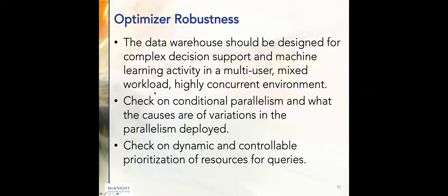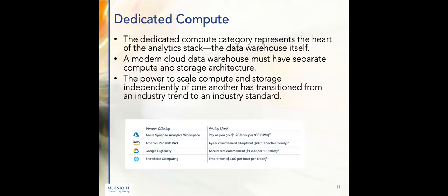Optimizer: the warehouse should be designed for complex decision support and machine learning activity in a multi-user, mixed workload, highly concurrent environment. All optimizers should still be under high development. No optimizers are — shall I say — fully optimized. They still need a lot of work, and some are much better than others. You want to check: does it have conditional parallelism? Check on dynamic and controllable prioritization of resources for queries, which bleeds into workload management. That's a pretty important category.